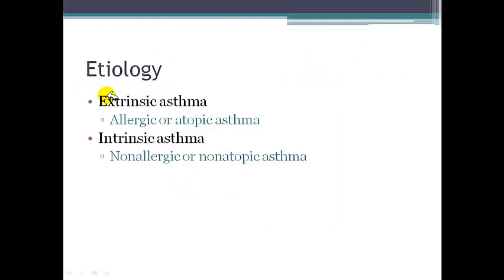What is the etiology of asthma and how could we classify it? Asthma is classified into two categories: it could be either extrinsic asthma or intrinsic asthma. Extrinsic asthma is allergic or atopic asthma, meaning it is due to the individual's allergy to particular allergens — for example, pollens, some kinds of drugs, some kinds of plants, and so on.